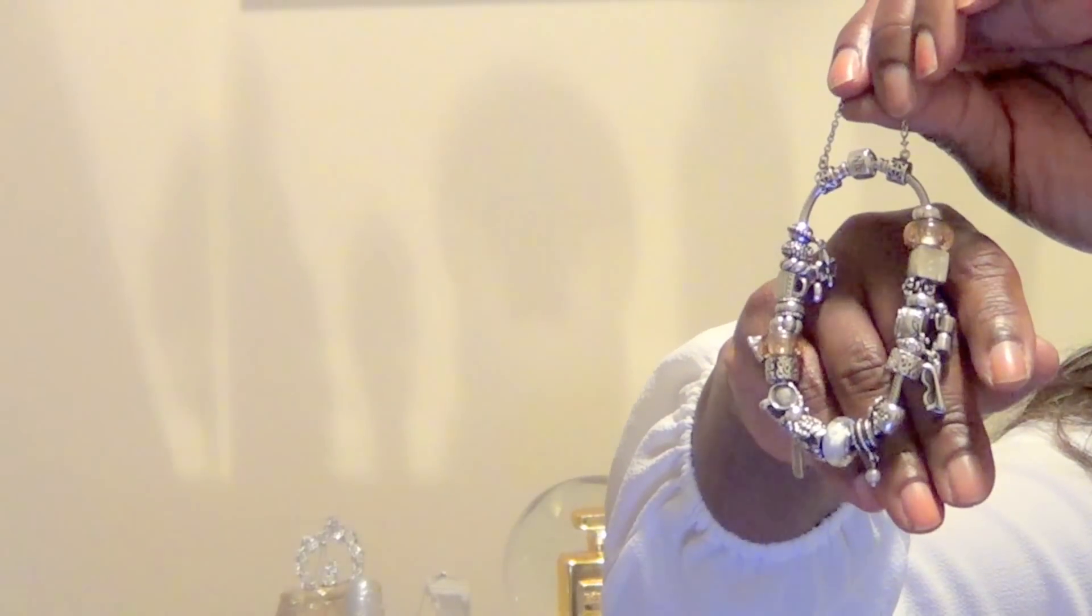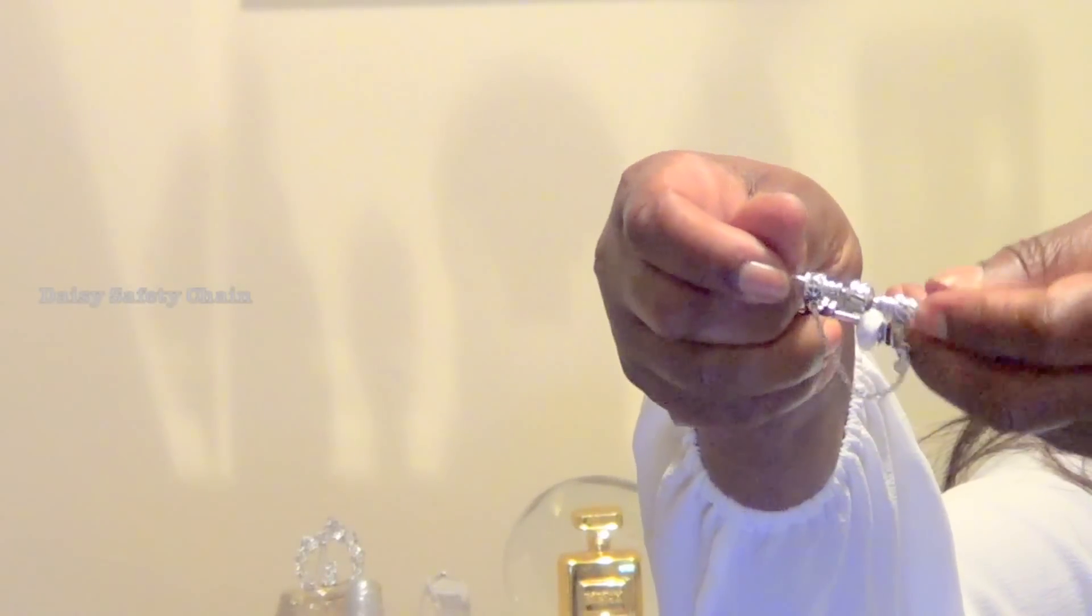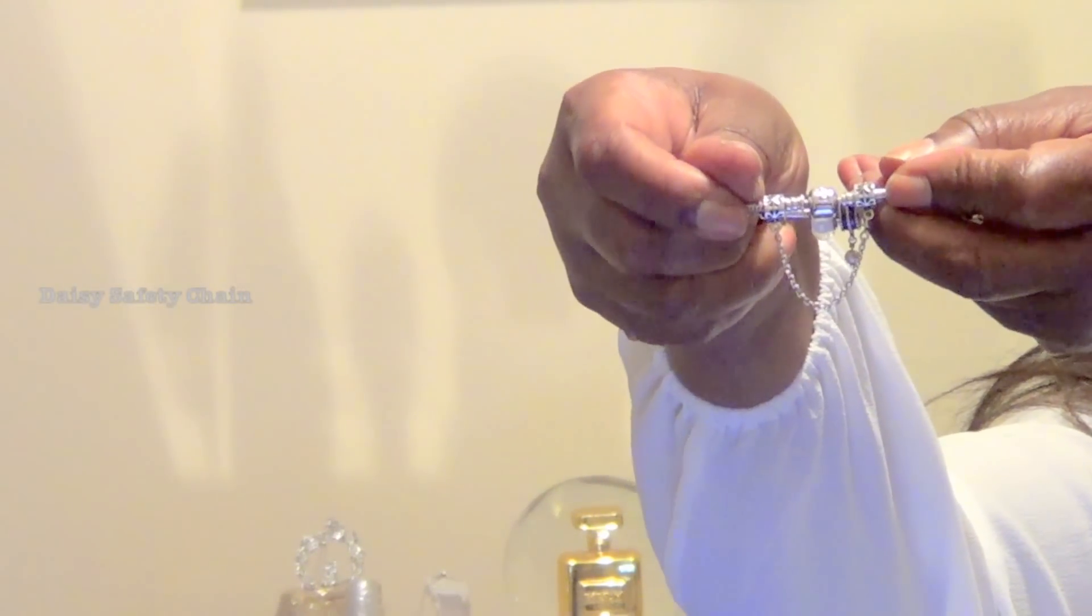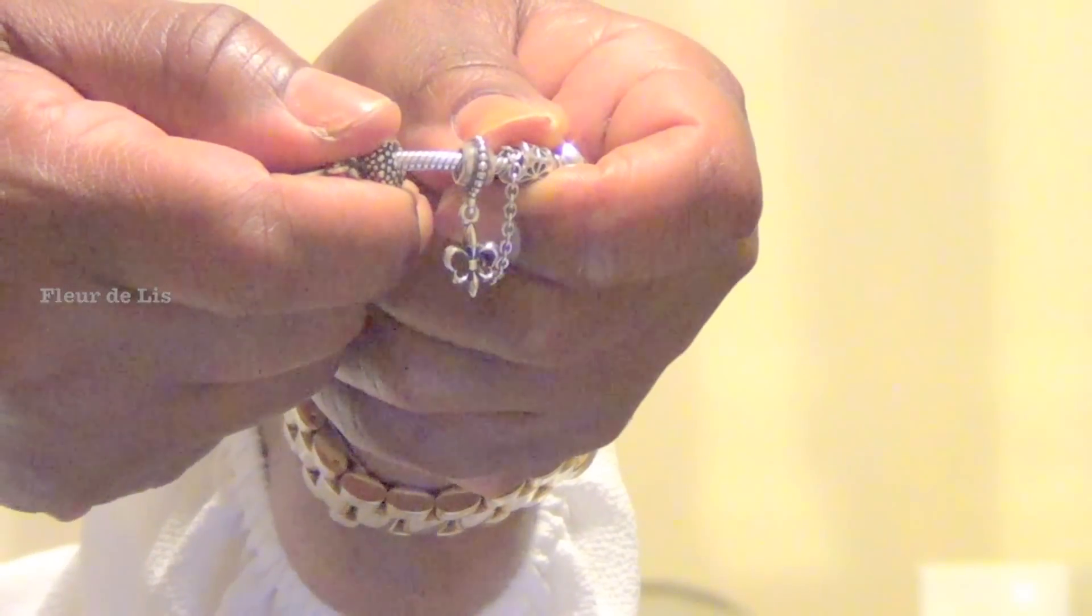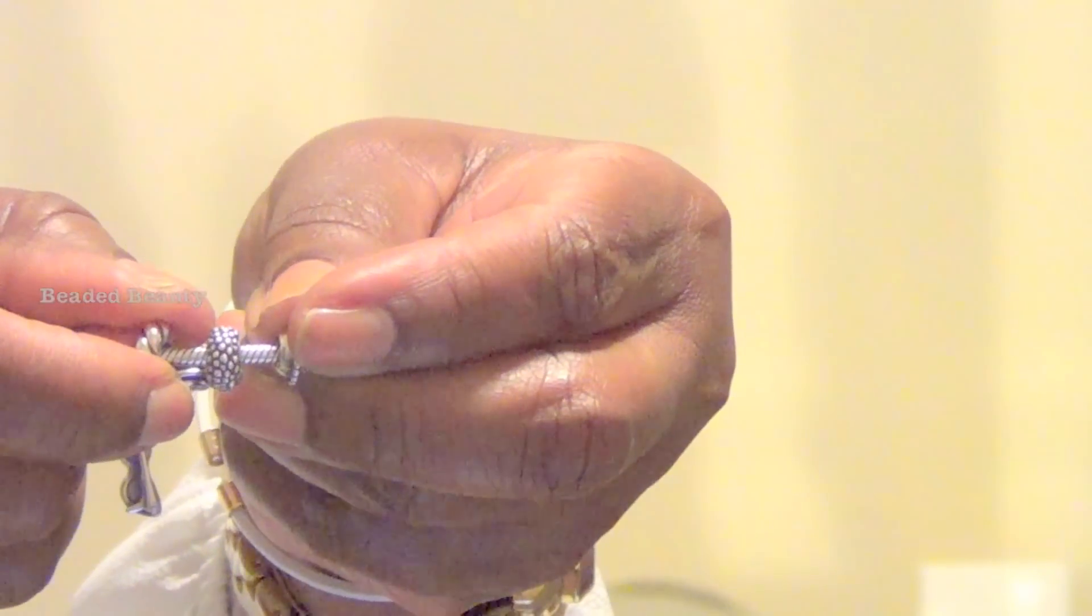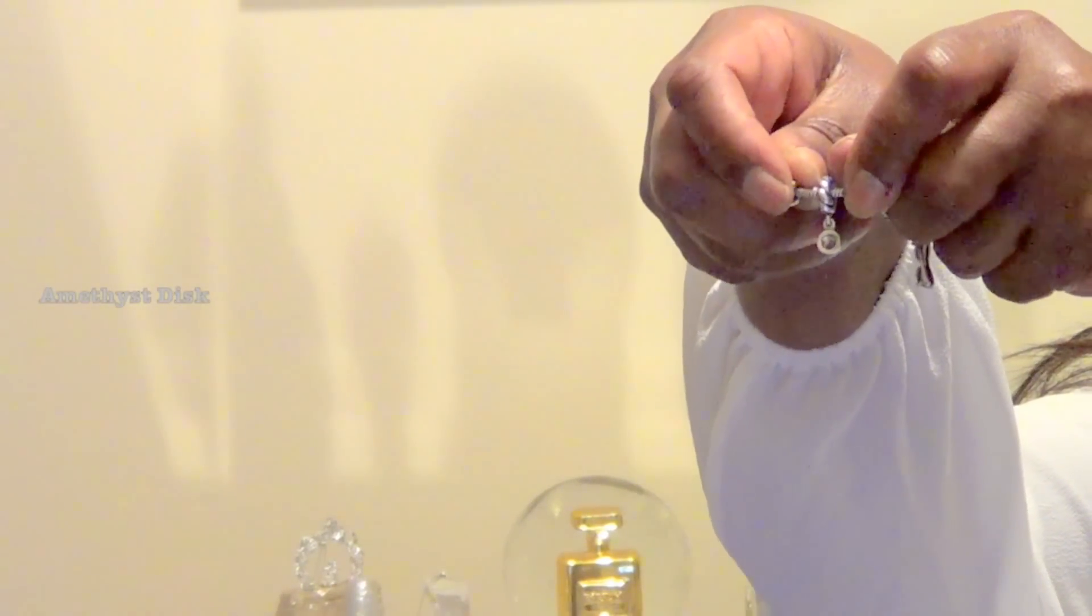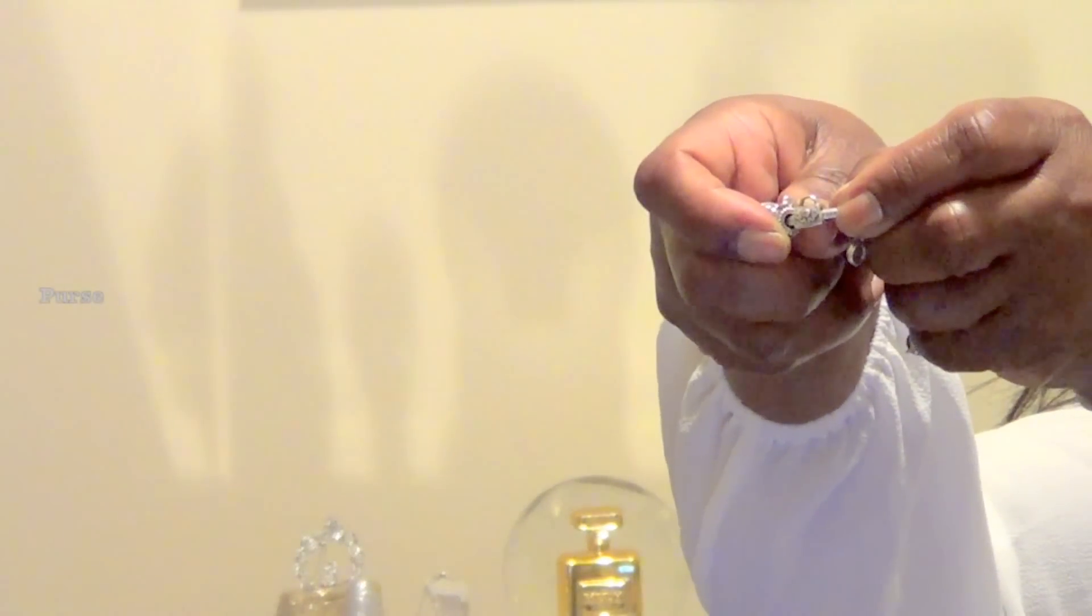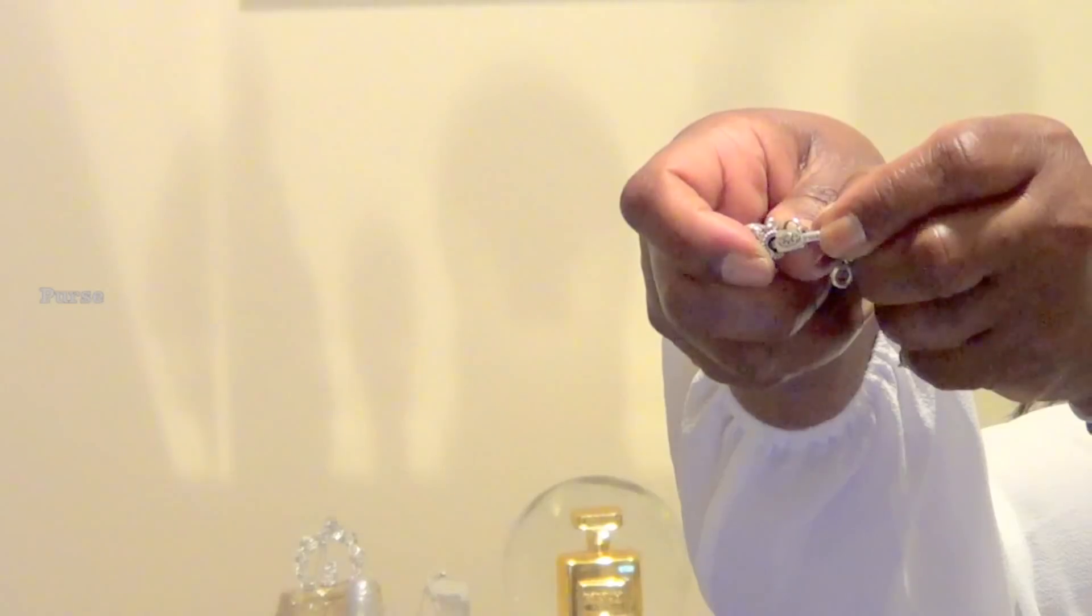This is the first bracelet I got when I started my Pandora collection. The first thing I have on here is the daisy safety chain. This is the french flower fleur de lis. This is beaded beauty. This is the dangle amethyst disc. This cutie is purse. Because I love handbags so much. It's sterling silver with a little gold button as the opener.